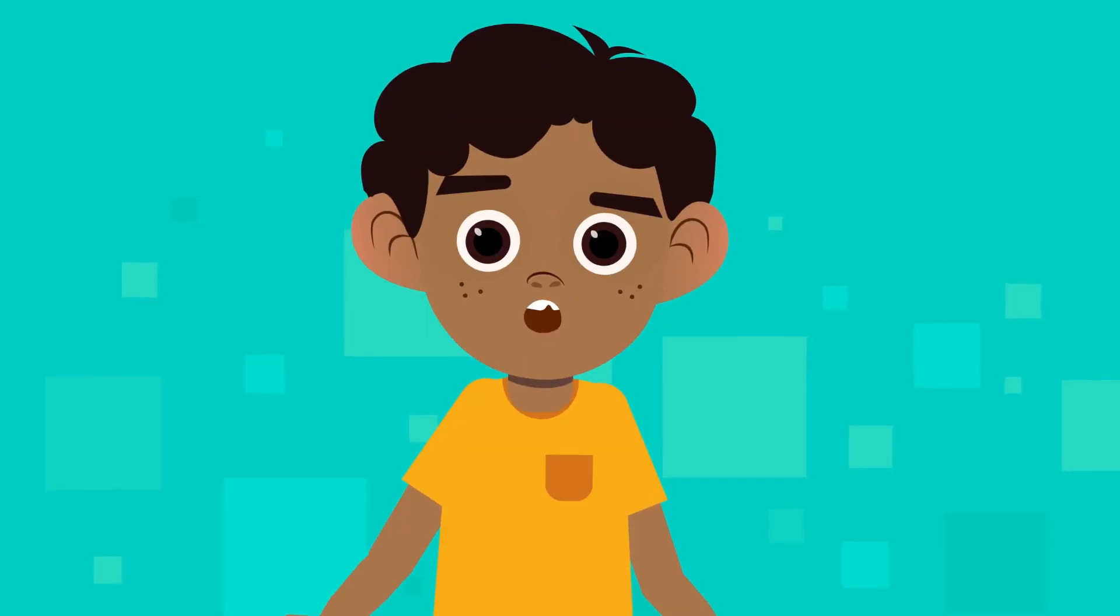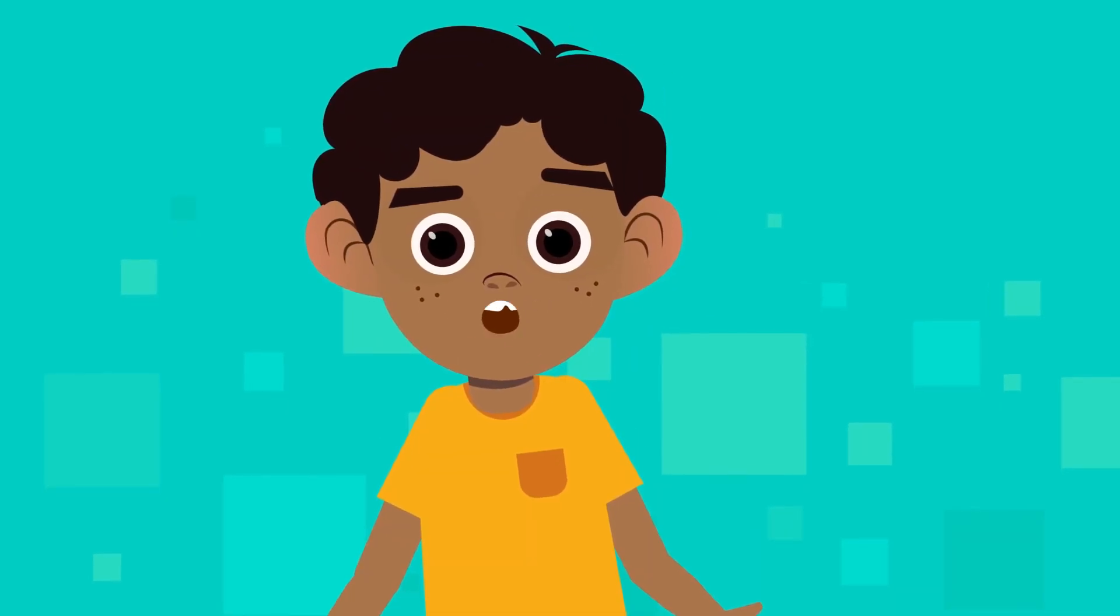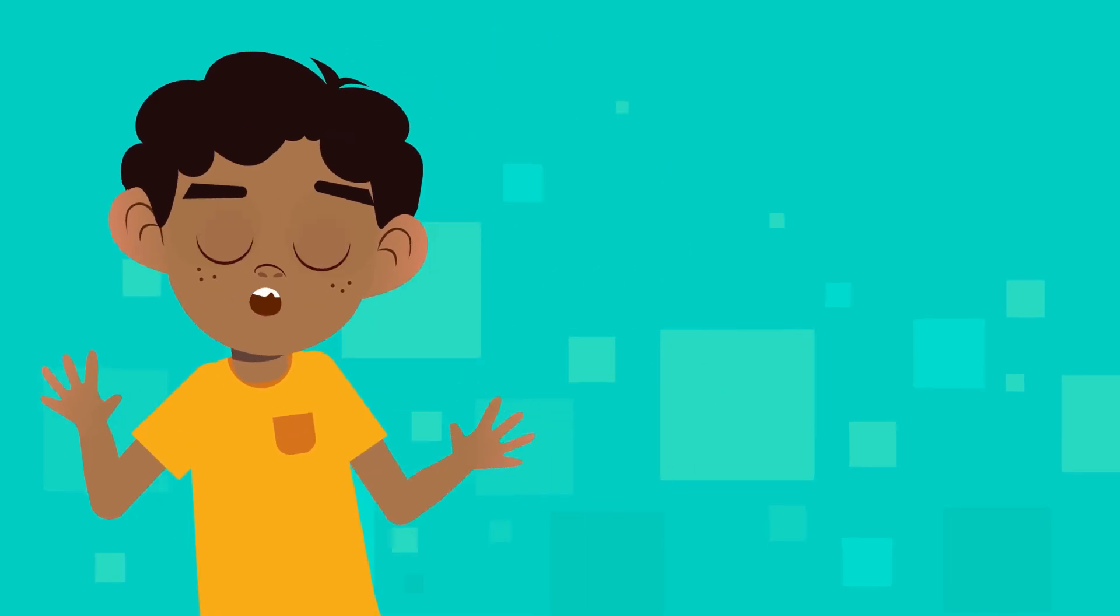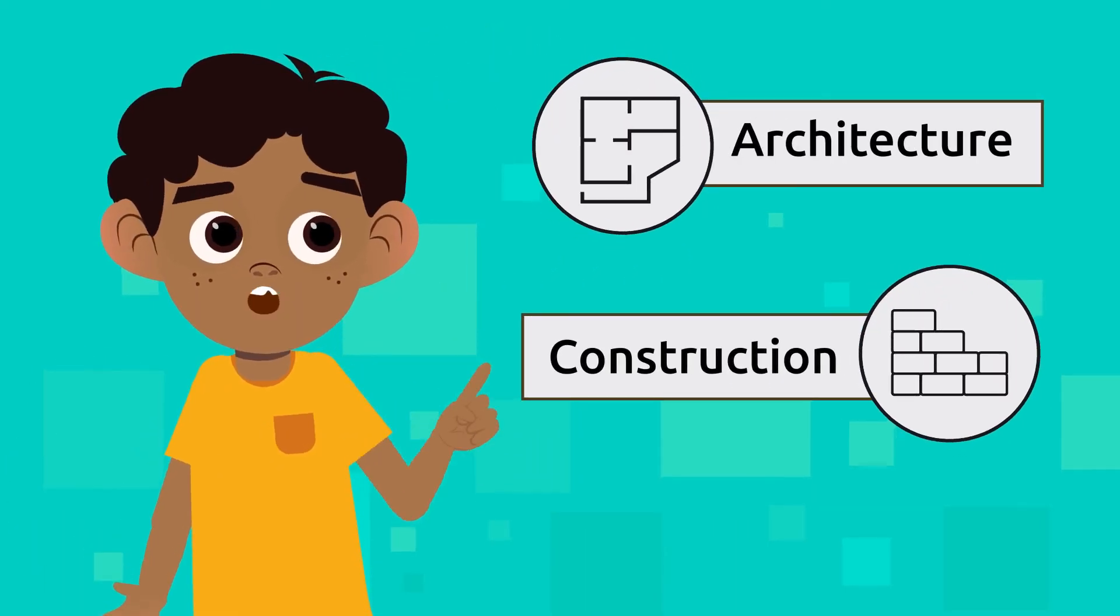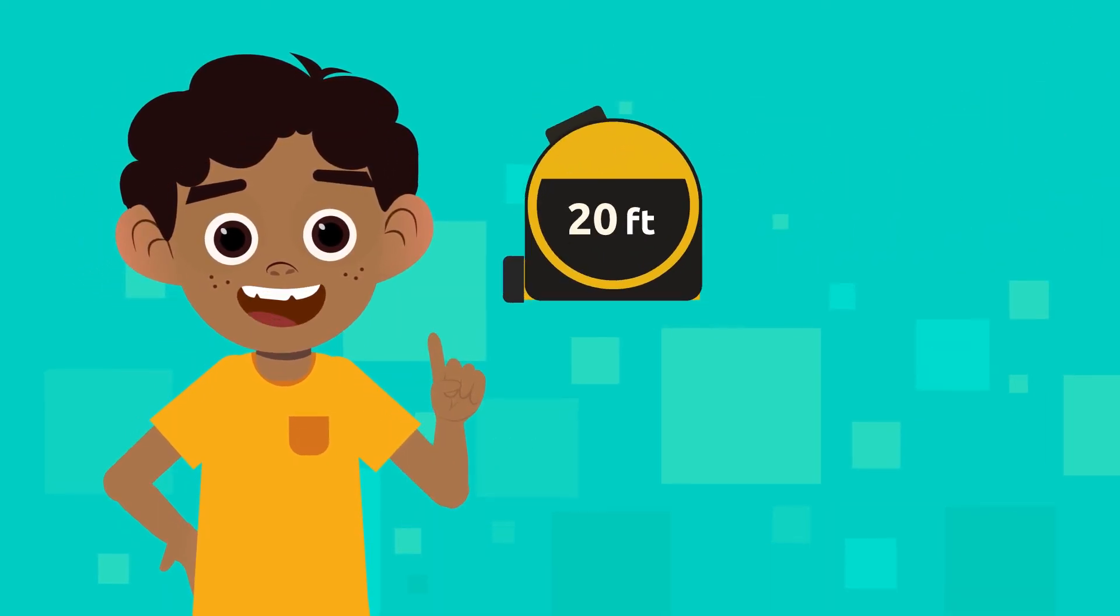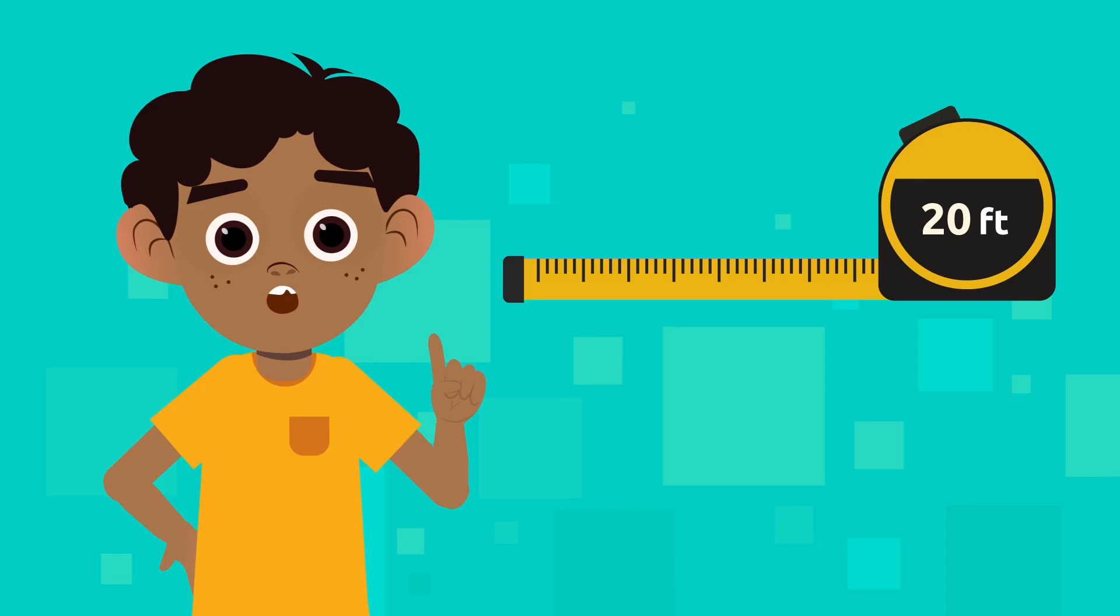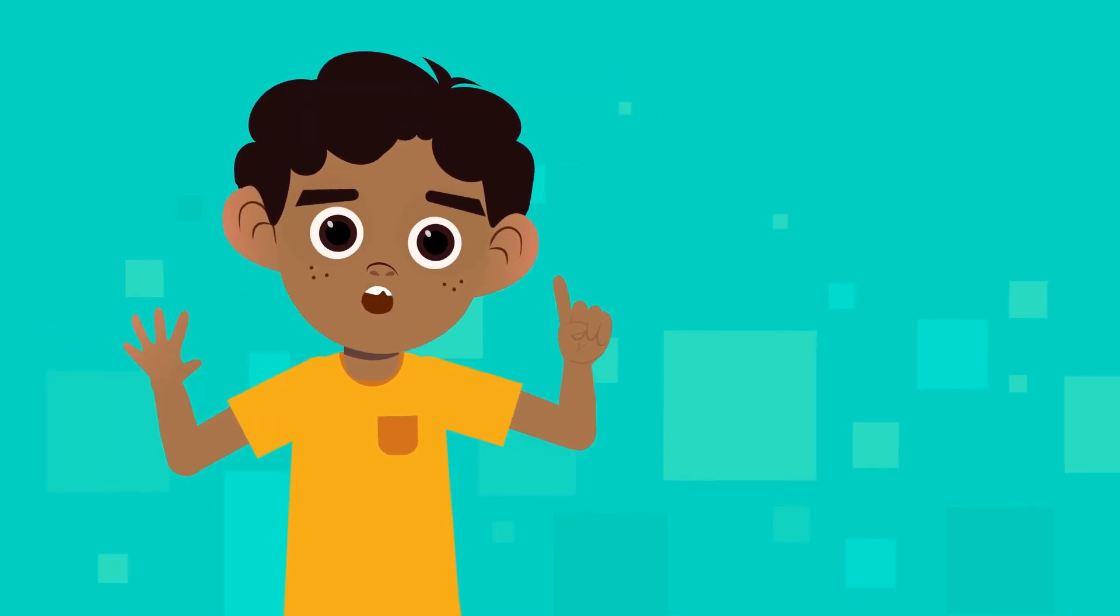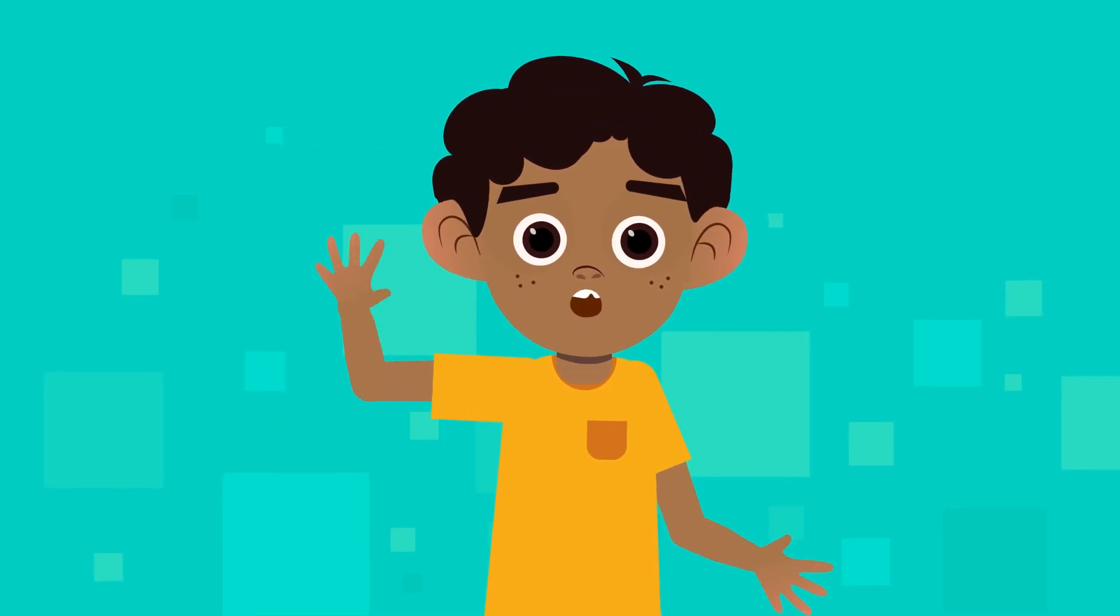As you have been able to see, knowing how to calculate the area of a square is very important in construction or architecture. Would you like to try another example? Look for a measuring tape and calculate the next square object you can find. Remember, you only need to multiply one side by the other. See you soon!